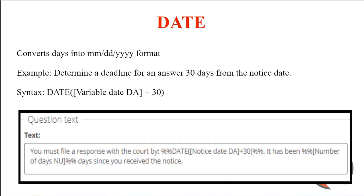The date function converts days into MM/DD/YYYY format. It's important to remember that it is month, then day, then year format if you're using this outside the US. For example, you can use it to determine a deadline for an answer 30 days from the notice date. The syntax is: date, parentheses, bracket, name of the variable, close bracket, and then in this example you're adding 30 to the date variable and converting that to a date. You can also just convert any number of days into the MM/DD/YYYY format as well.